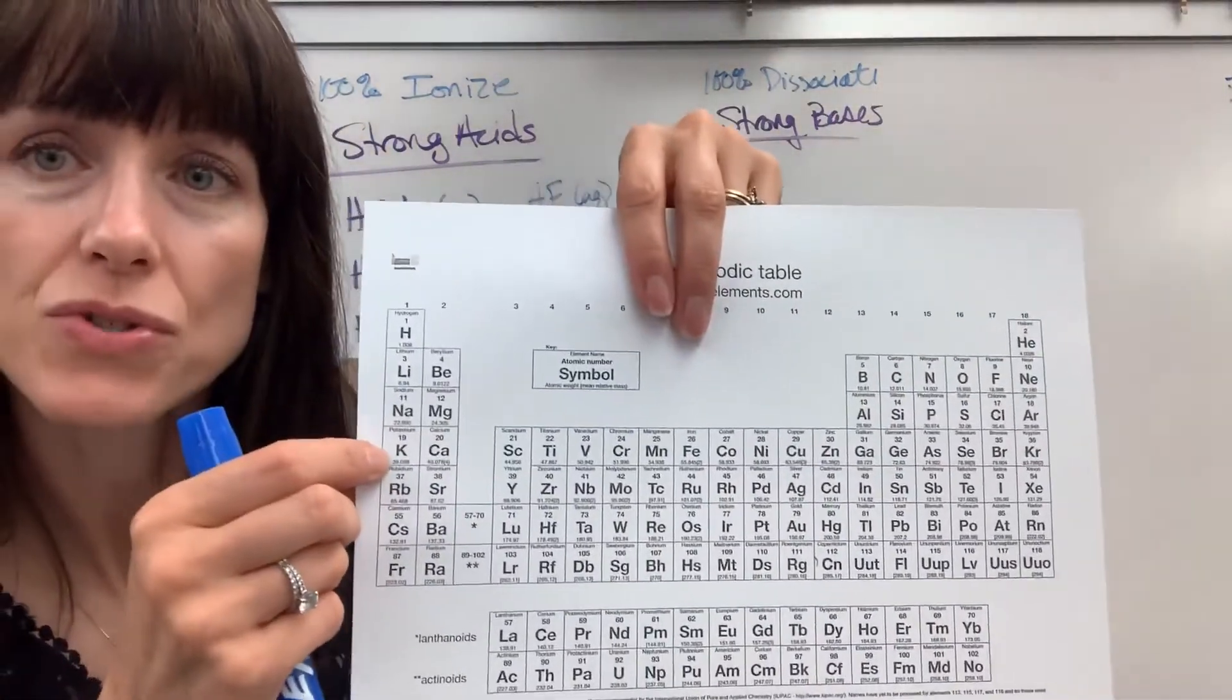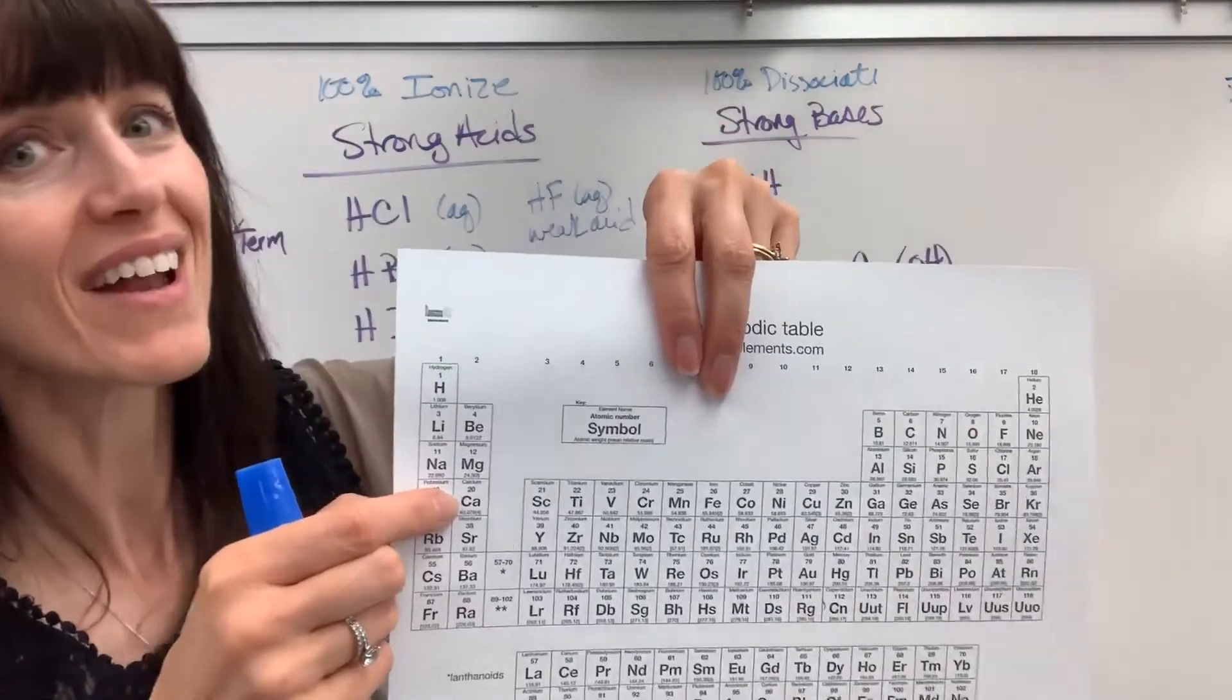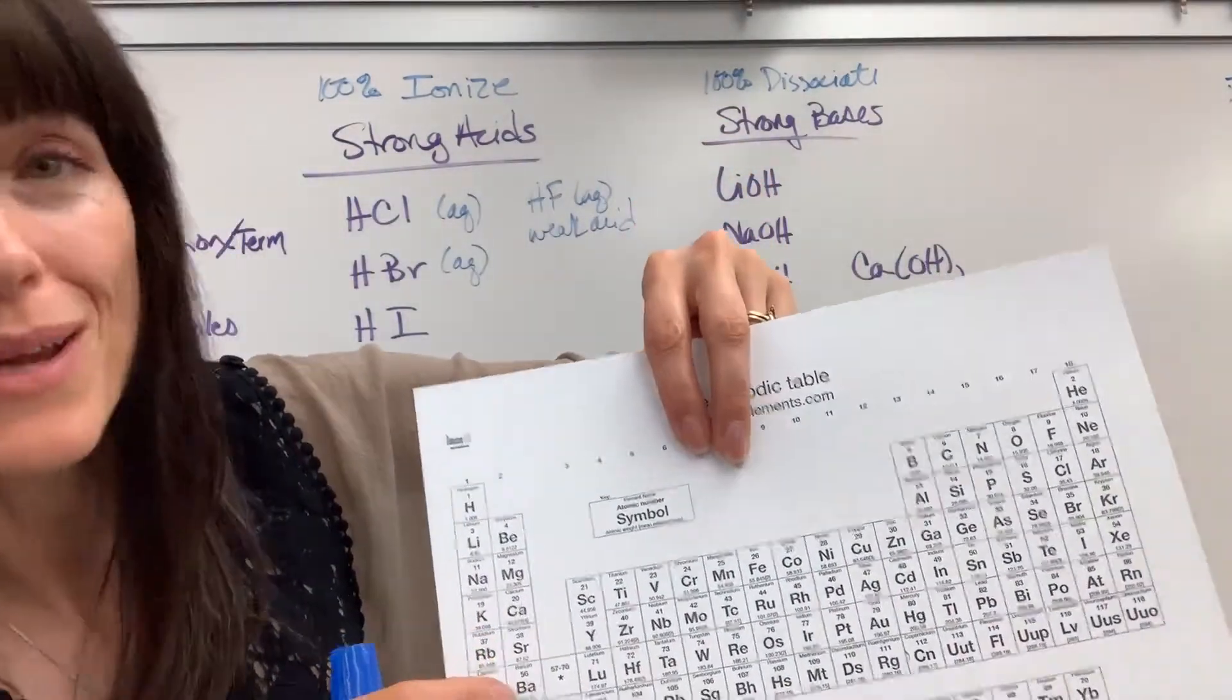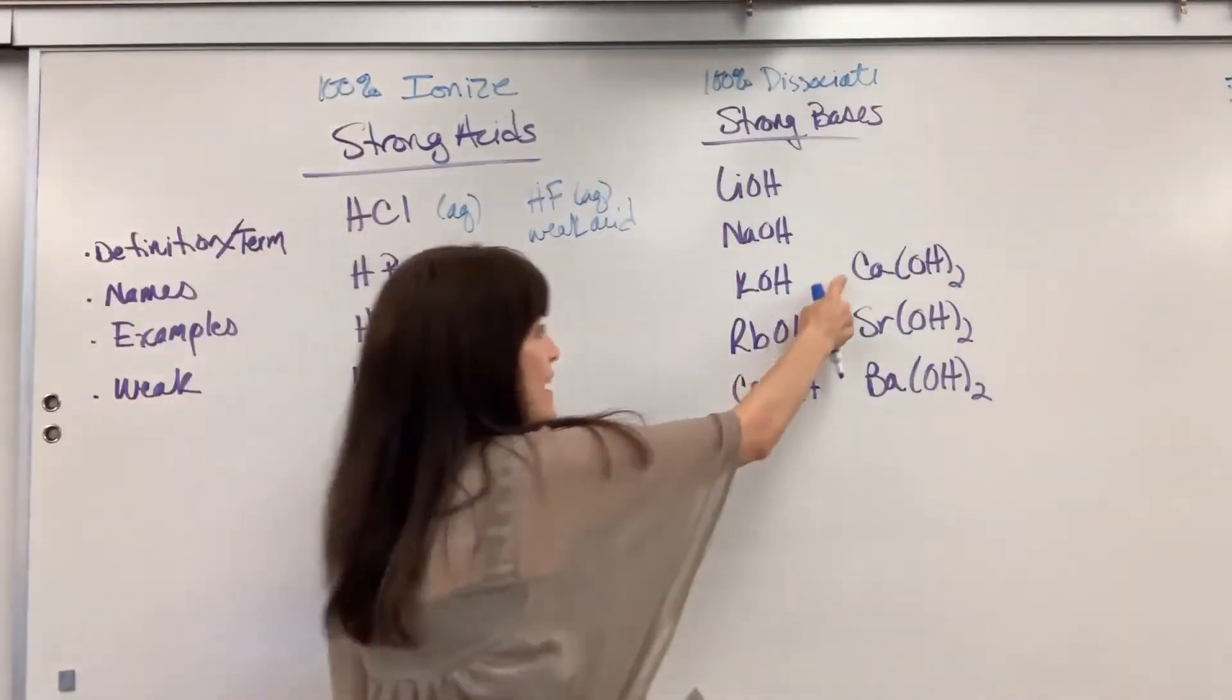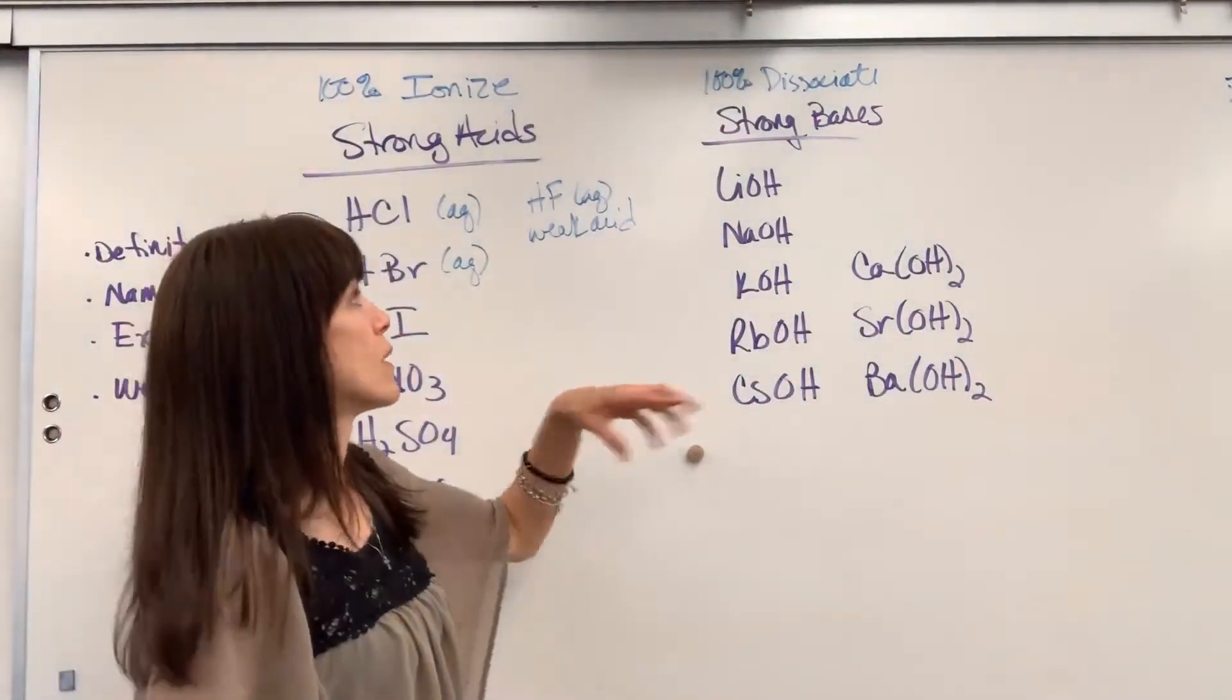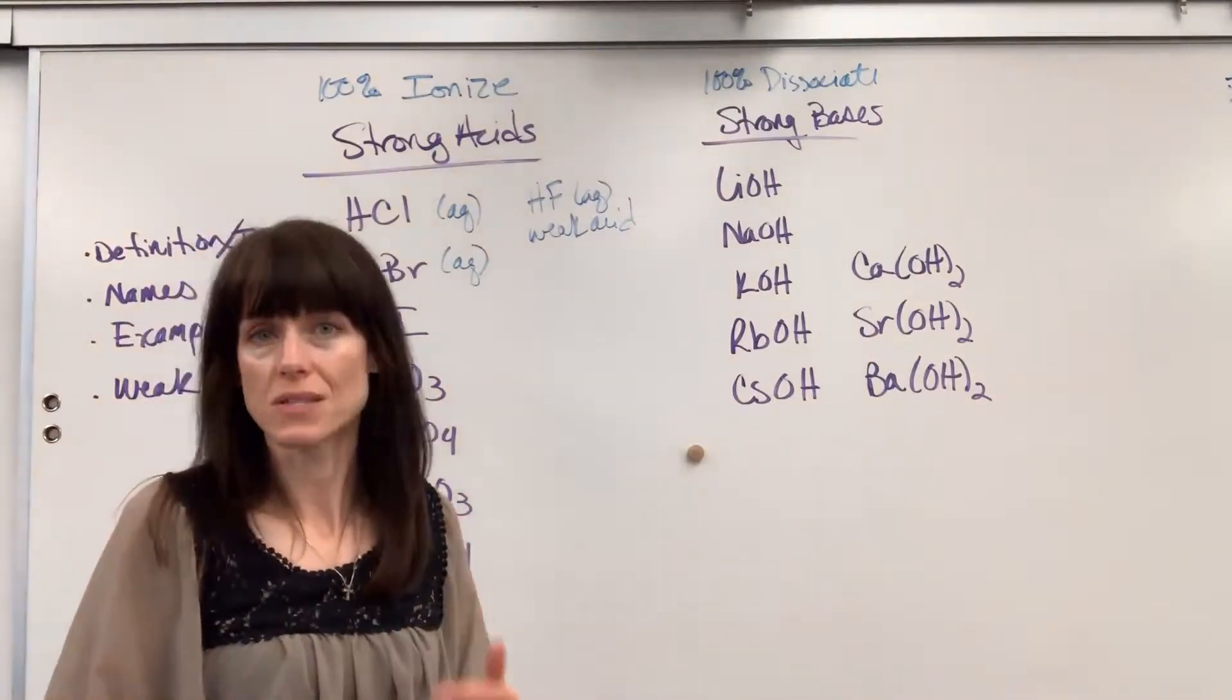And then if you come from potassium, straight over alkaline earth metals, there we have calcium, strontium and barium. Check it out. Calcium hydroxide, strontium hydroxide, barium hydroxide. Those all 100% dissociate.